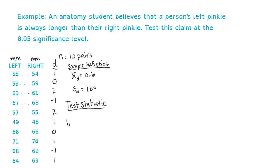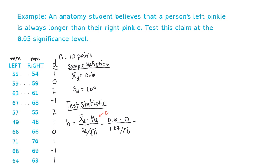Our test statistic is a t-score because we are using the sample standard deviation and not the population standard deviation, and we are estimating the mean. The formula is x-bar sub d minus mu sub d — the claimed population mean of the differences — divided by the sample standard deviation of the differences over the square root of the sample size. In our problem, this is 0.6 minus 0, divided by 1.07 over the square root of 10. Our test statistic is 1.77.